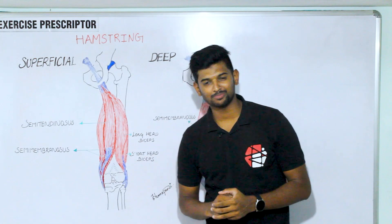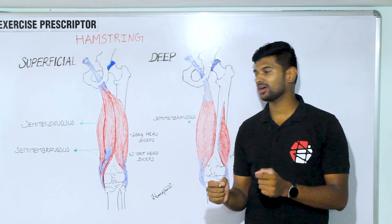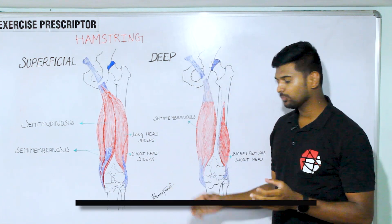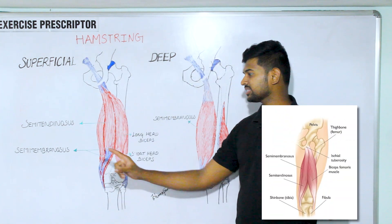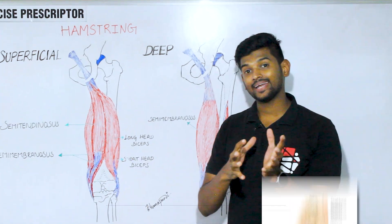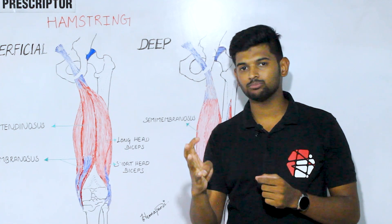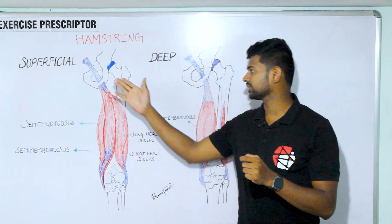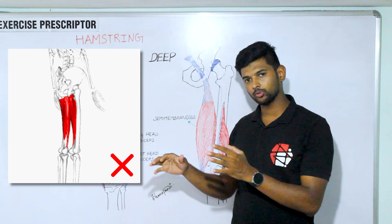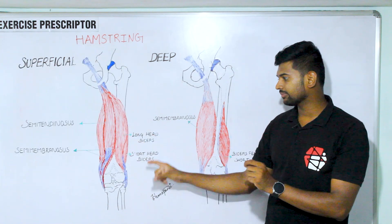Hi everyone, welcome to XS Prescriptor in our muscle knowledge series. Today we're going to talk about the hamstring muscle group. This is a group of three muscles: semitendinosus, semimembranosus, and biceps femoris. Adductor magnus is also considered a fourth hamstring because it also attaches at the ischial tuberosity, but today we're not going to talk about adductor magnus — we'll talk about these three muscles in the hamstring group.